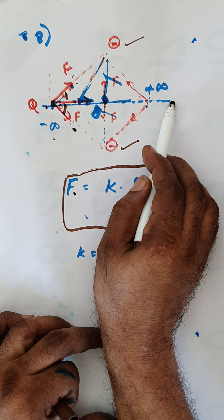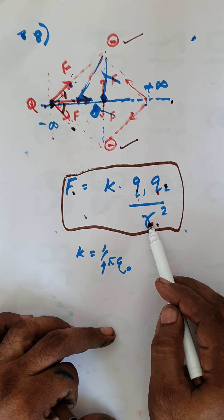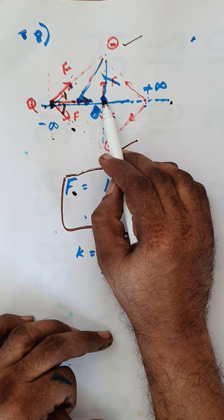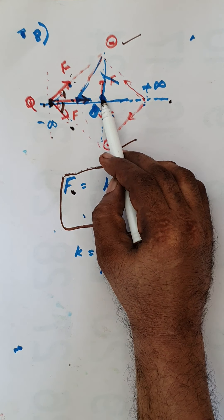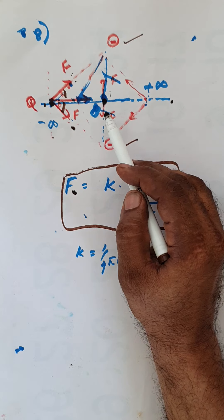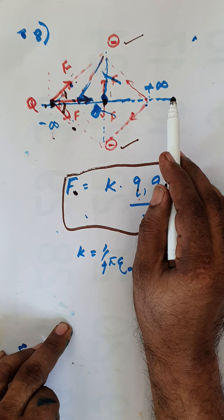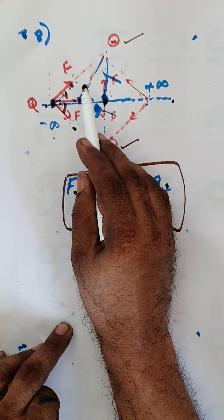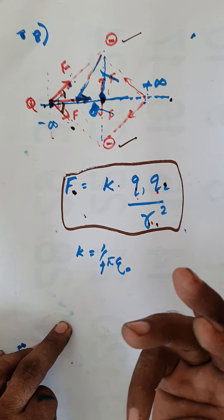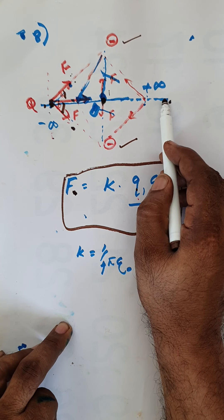But when R is at infinity, F becomes zero. When Q comes to the origin, the resultant force becomes zero again. So the force on capital Q has three zero points: minus infinity, origin, and plus infinity.